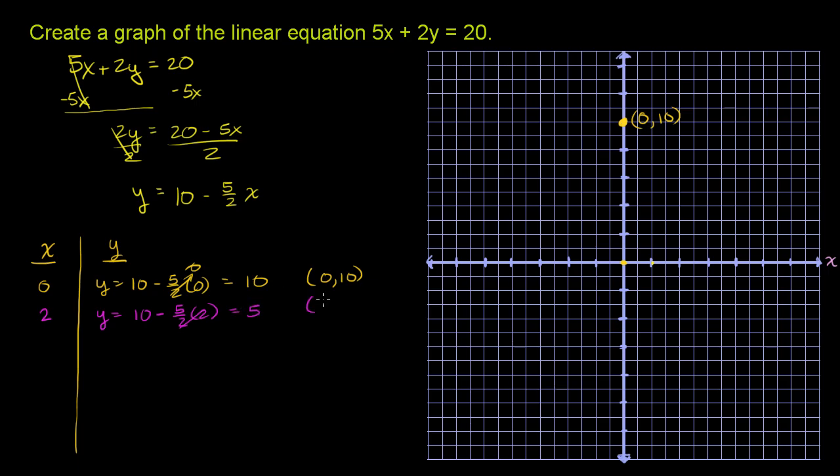So that tells us the point x equals 2, y is equal to 5 is on the line. So 2, x is equal to 1, 2 right over here. And then y is equal to 5. We go up 5. 1, 2, 3, 4, 5, just like that. So that's the point 2, 5.